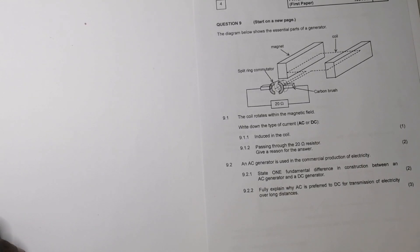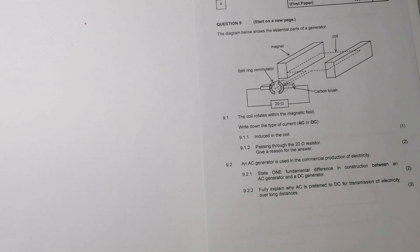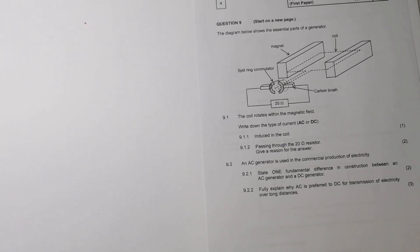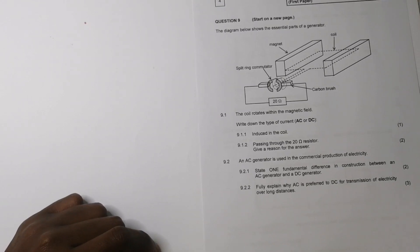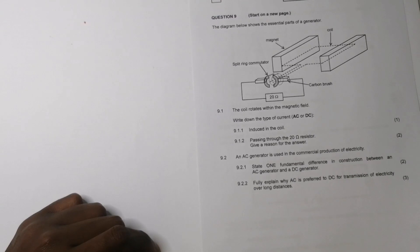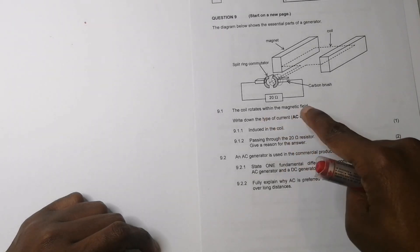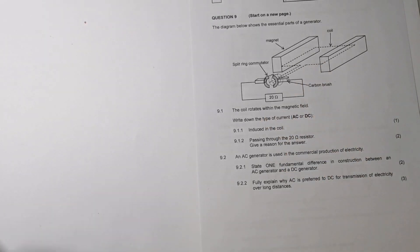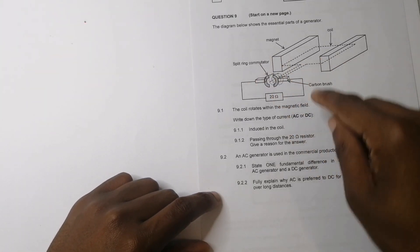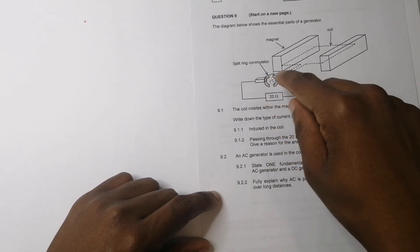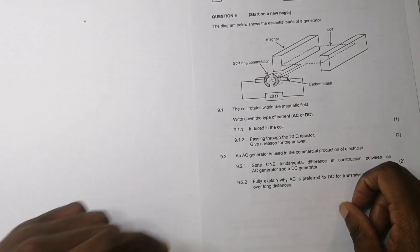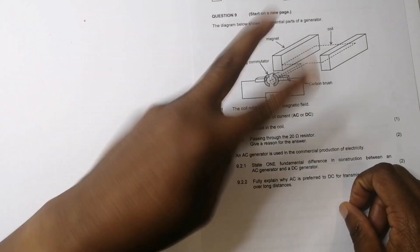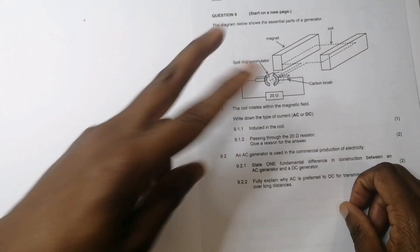Alright, now let's get right into the question. So in electrodynamics, they've given us a diagram below that shows the essential parts of a generator. They have told us this is definitely a generator. They say the coil rotates within the magnetic field.